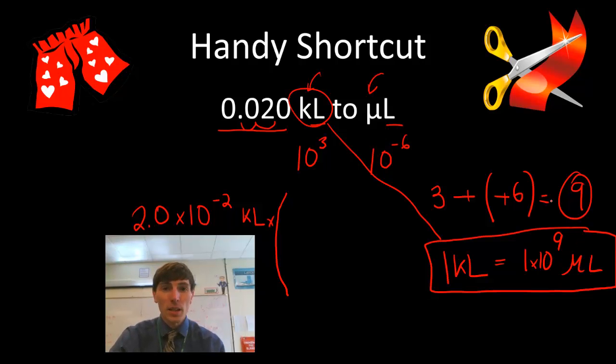You can always do this. Take the first power of 10, subtract the second power of 10. You find the difference between the two. It's always going to be 1 of that first unit is equal to that power of 10 of the unit you're converting to.